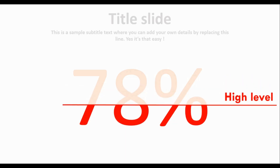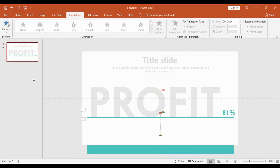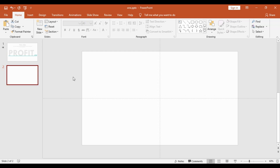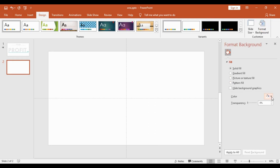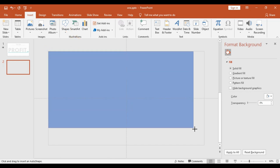First, we will go into Home and select a blank slide. Then we will go into the Design tab, then Format Background, select a solid fill, and we will fill it with a light gray color.